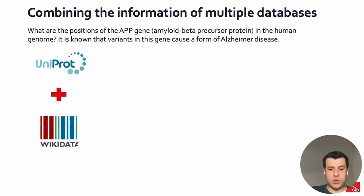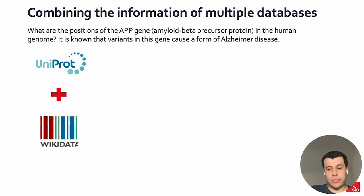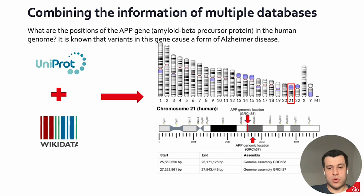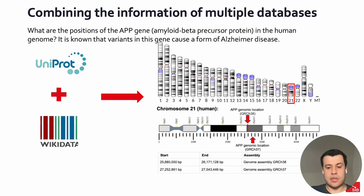For instance, if we want to combine UniProt and Wikidata to answer the question: what are the positions of the APP gene in the human genome, knowing that this gene can cause a form of Alzheimer's disease — this information comes from UniProt — and to know the position in the human genome, it requires combining it with Wikidata, resulting in knowing that this gene is located on chromosome 21, but also the exact position in different genome assemblies, as you can see here in the table.